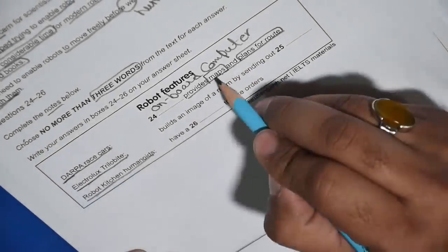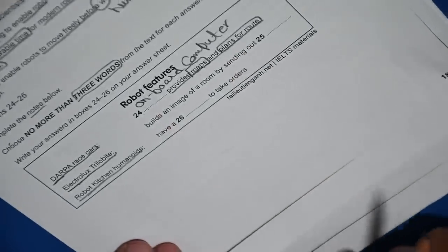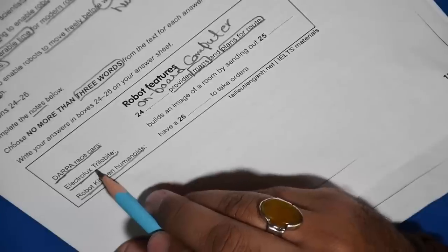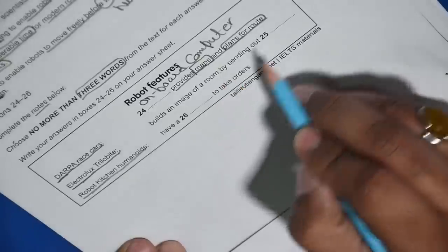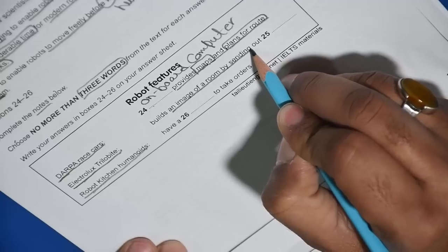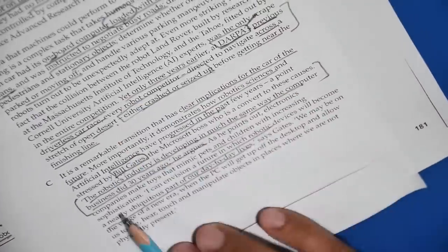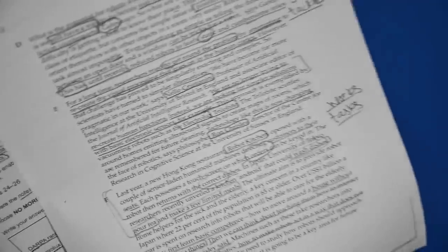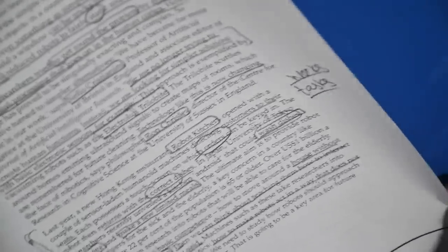Okay, the next one is Electrolux trilobite. Trilobite builds an image of room by sending out something. So first thing is I need to see where do they mention about Electrolux. I think I underlined it somewhere. Electrolux, I underlined it. Yeah, this one. Okay, now we need to read it carefully. What does it do?